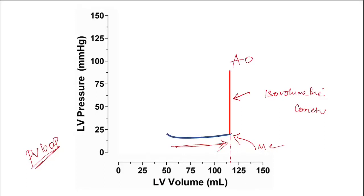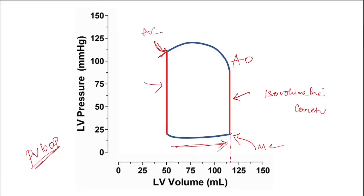Once the aortic valve opens, the volume decreases. When the ventricular pressure drops below aortic pressure, the valve closes and the ventricle begins to relax. At that point both mitral and aortic valves are closed. During relaxation there is no change in volume — only the pressure drops steeply. This is isovolumetric relaxation.